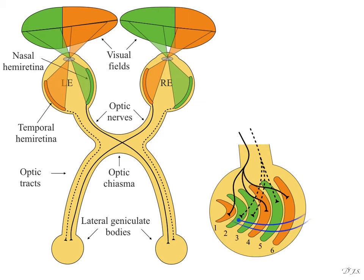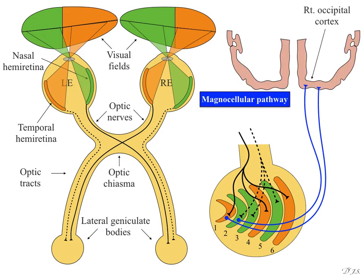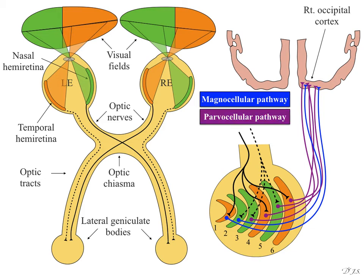Sensations from layers 1 and 2 terminate as the magnocellular pathway on the right occipital cortex, and sensations from layers 3 to 6 reach the right occipital cortex as the parvocellular pathway. These two pathways together form the optic radiation.